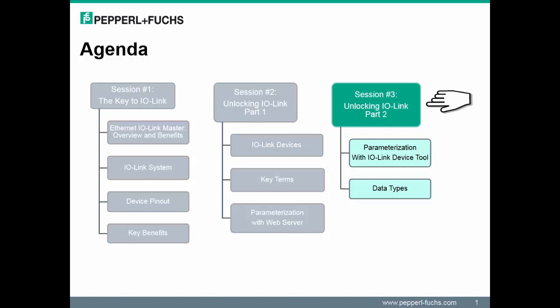In session 3, we are now ready to review the final list of topics. Note, some topics in this session will be a review to reinforce some key points. The list of topics includes a recap of parameterization with IO-Link, introduction to the IO-Link device tool, and finally, data types with IO-Link.